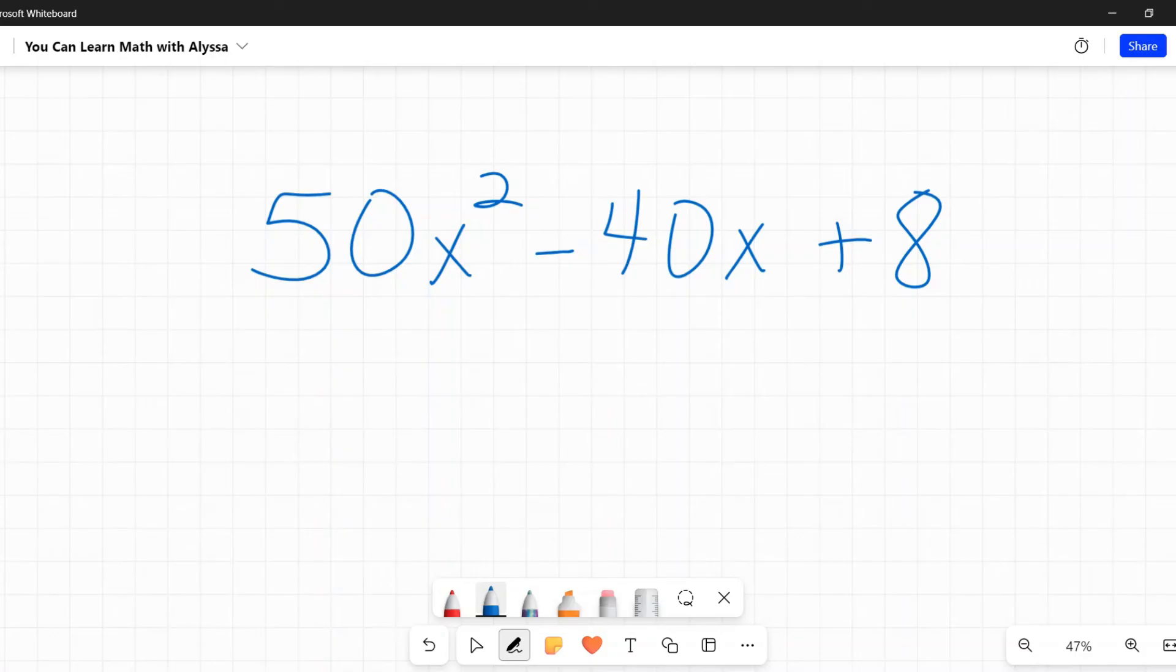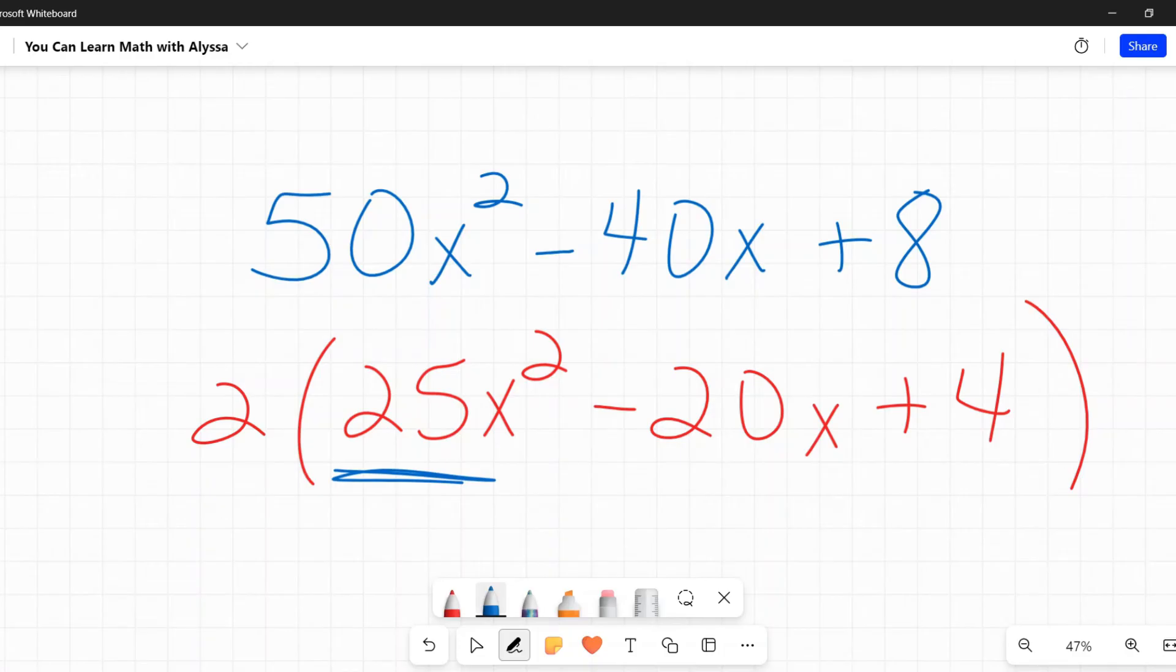What they want you to do first, and honestly, this should be your first step for any factoring, is to see if there is a greatest common factor that you can pull out. Always do that first. It will make your life so much easier. In this case, I'm looking at 50, negative 40, and 8. I know that they are all even. So I'm going to pull out 2.